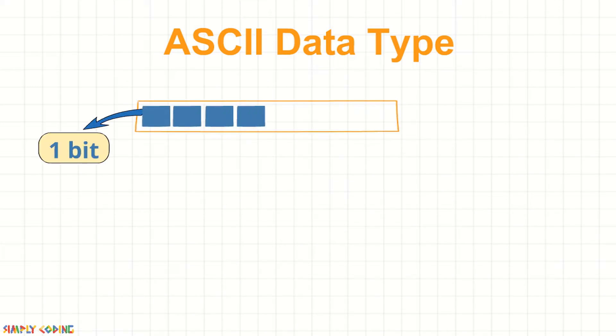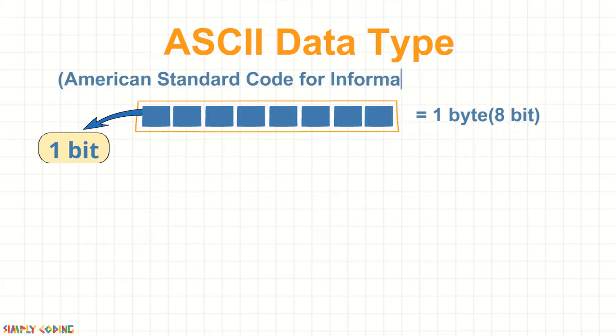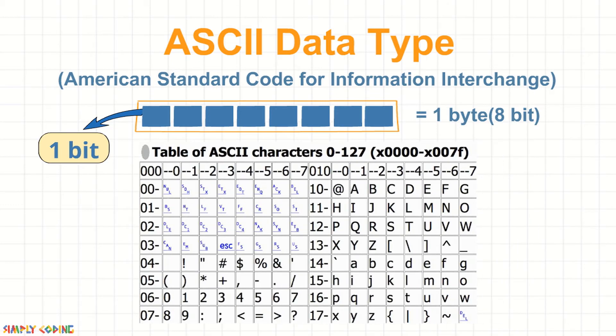Initially, only 1 byte was used to store character data. Then ASCII or American Standard Code for Information Interchange character encoding scheme was used to represent English characters as numbers, with each letter assigned a number from 0 to 127. For example,